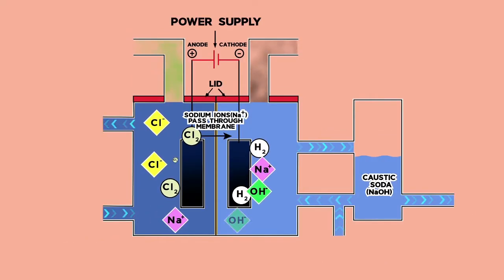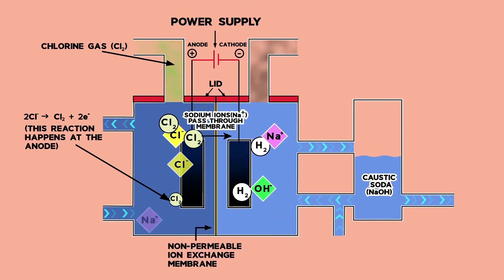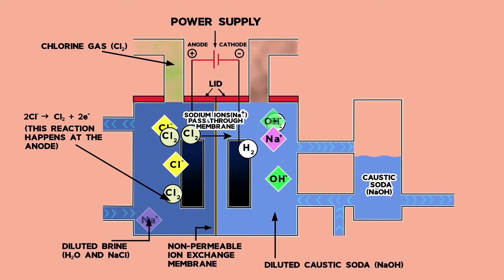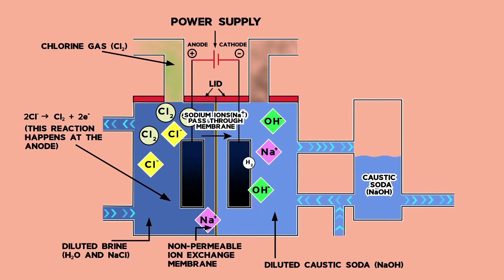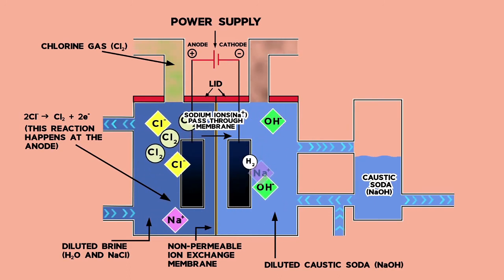There is a better form of the cell called a membrane cell. It works in a very clever way. The membrane only allows the positive ions to pass through. The reason this is good is because the sodium hydroxide made this way doesn't have any sodium chloride in it.